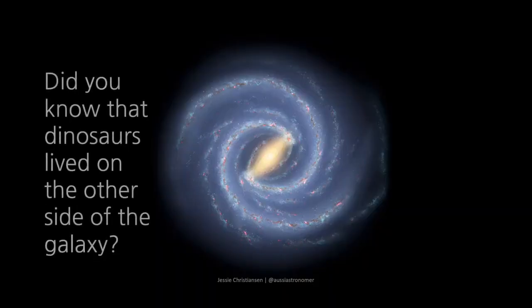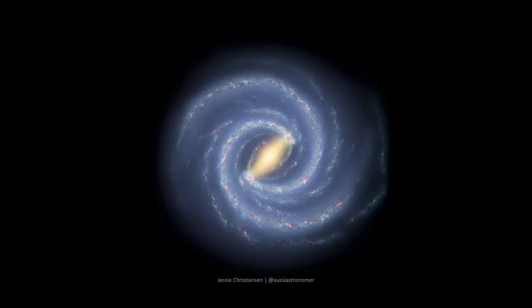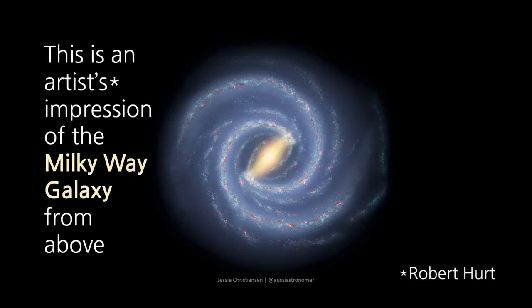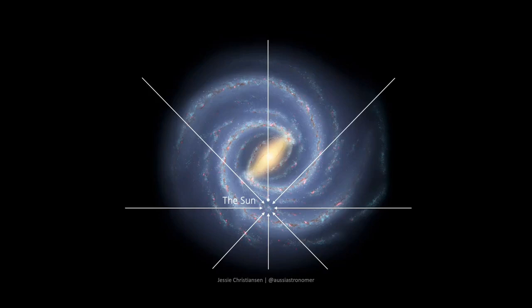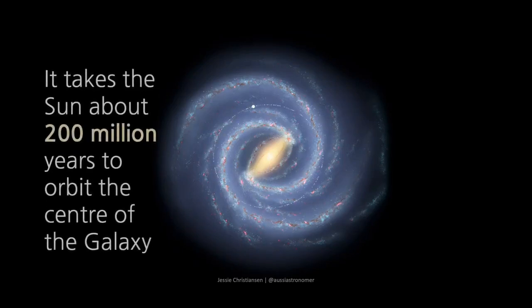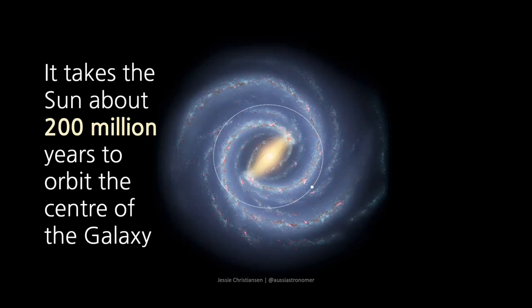Did you know that dinosaurs lived on the other side of the galaxy? This is an artist's impression of the Milky Way galaxy from above. It takes the Sun about 200 million years to orbit the center of the galaxy.